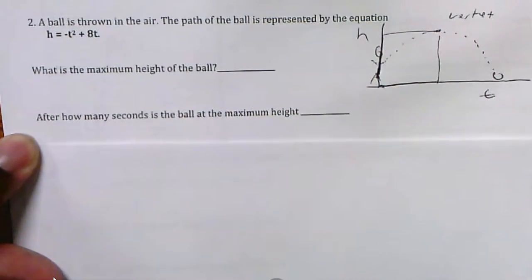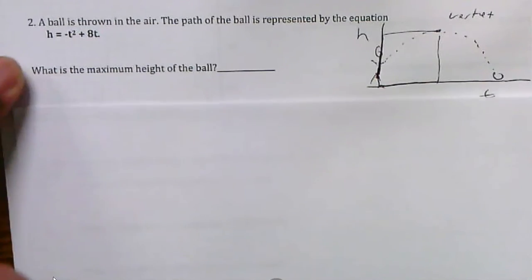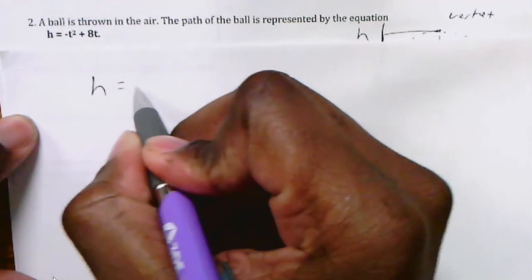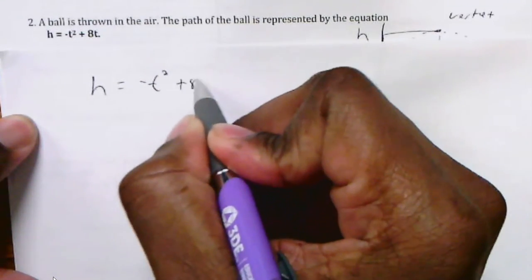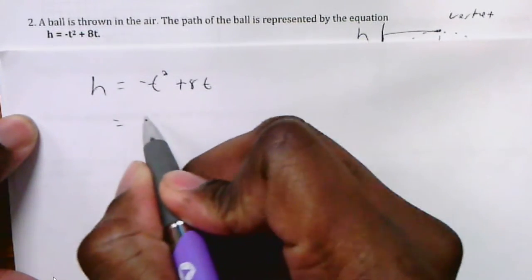Looking at this equation, in order to find the vertex, I would take that equation. It says h of t equals negative t squared plus 8t. And I would factor out a negative 1 from both.